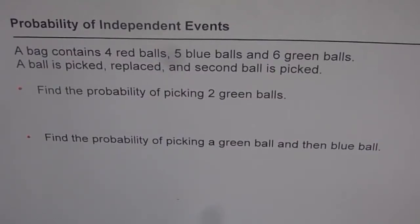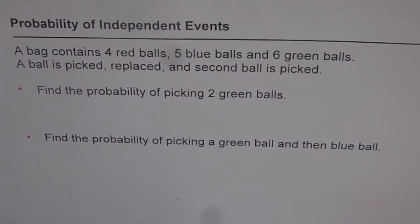Probability of Independent Events. A bag contains four red balls, five blue balls and six green balls. A ball is picked, replaced, and a second ball is picked. Find the probability of picking two green balls. The second part is: find the probability of picking a green ball and then a blue ball.